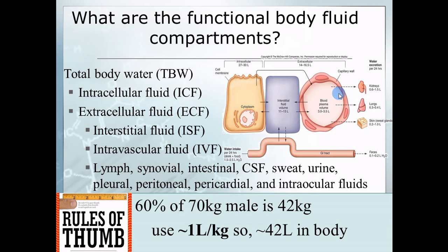Some terminology you need to get familiar with. First, TBW means total body water — if you pulled every drop of water out of the entire body. Our total body water is roughly about 60% of us. The rule of thumb: a 70-kilogram male, which is the average male according to medicine, is about 60% water, so about 42 kilograms of that person is water. An instant conversion you can use is that one kilogram is about one liter of water, or vice versa.